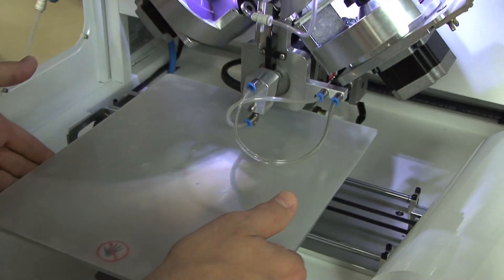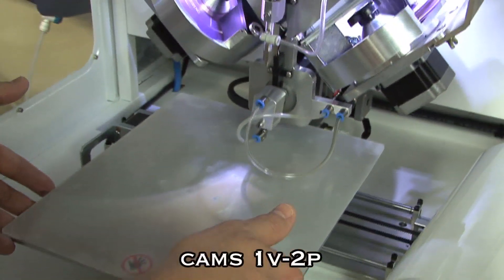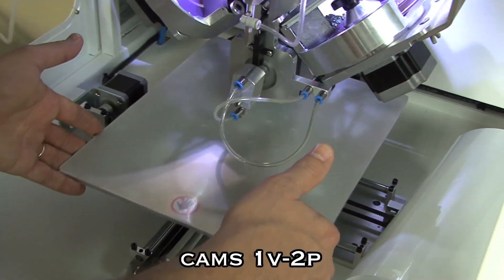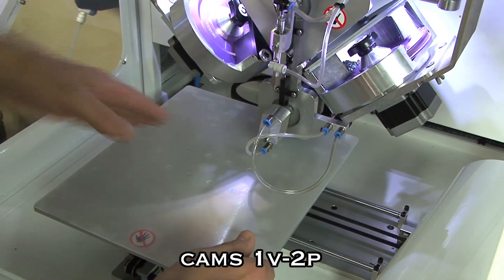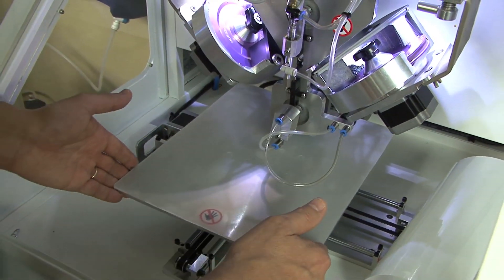Now this here is called a platen and to do the design what happens is this actually moves around on an XY axis so as the stones are placed, it's placed in the proper spot for your design.